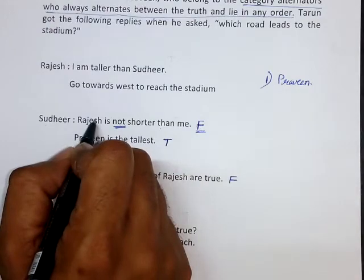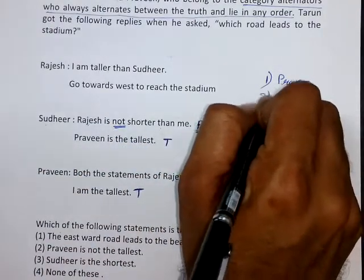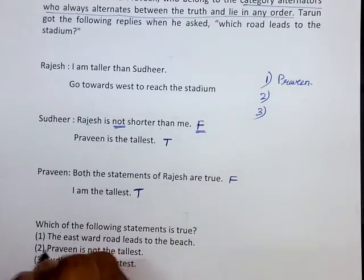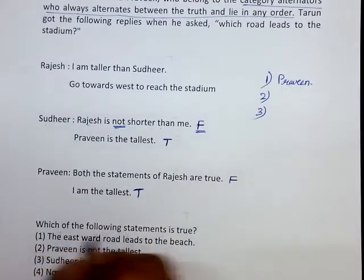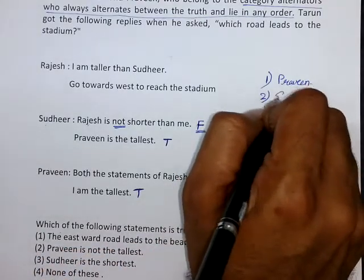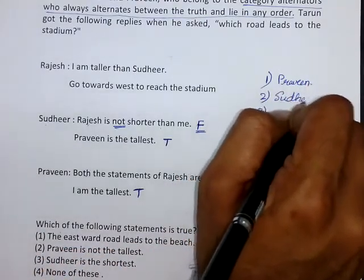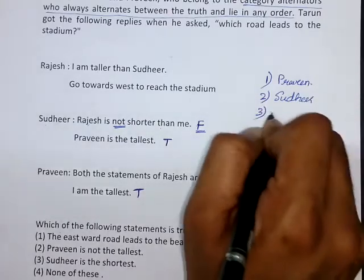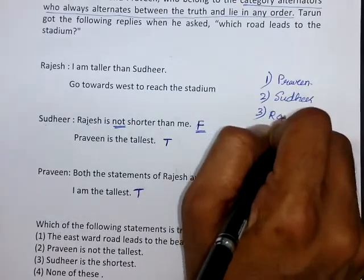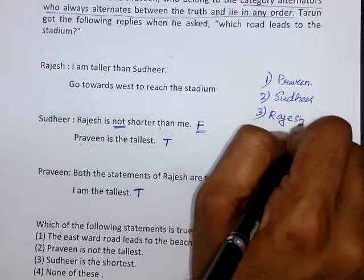Rajesh is not shorter than Sudhir is false — which means Rajesh is shorter than Sudhir is true. So if I arrange them according to height, Sudhir will be above Rajesh, and Rajesh will be in the third position.